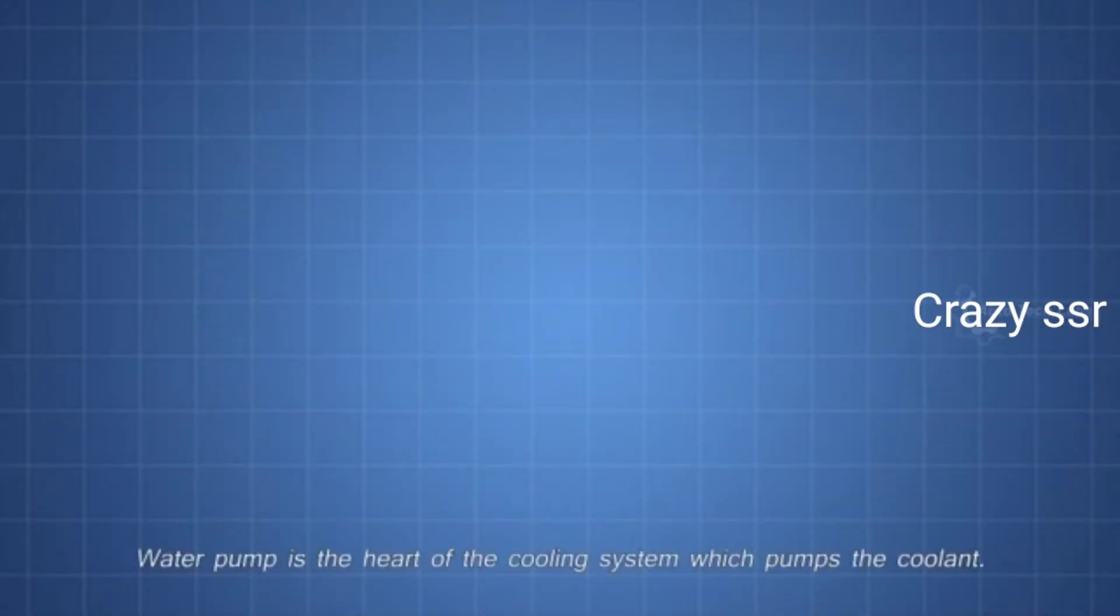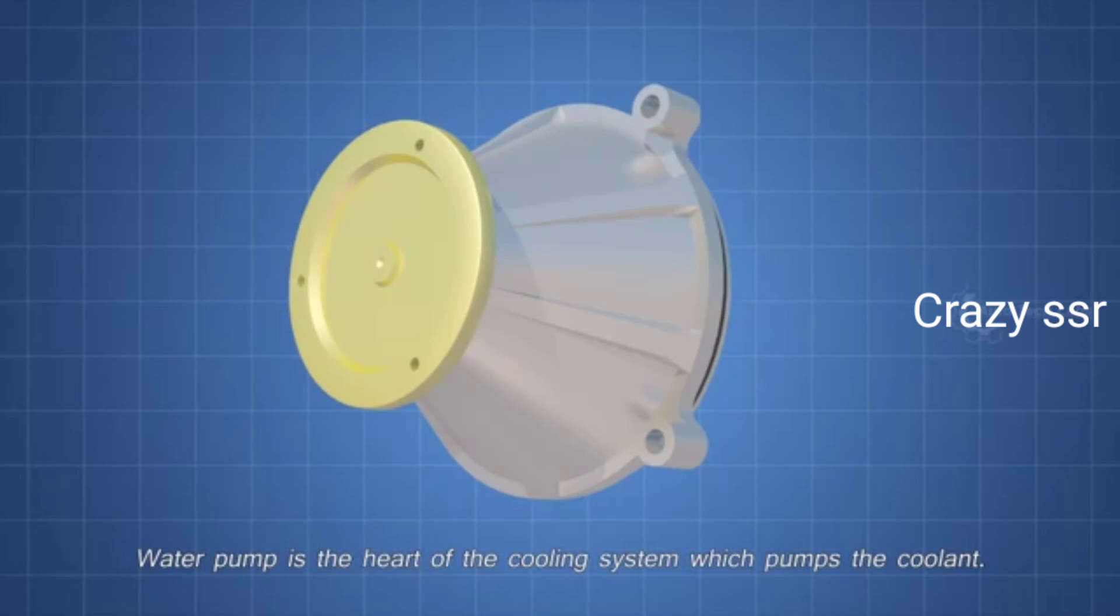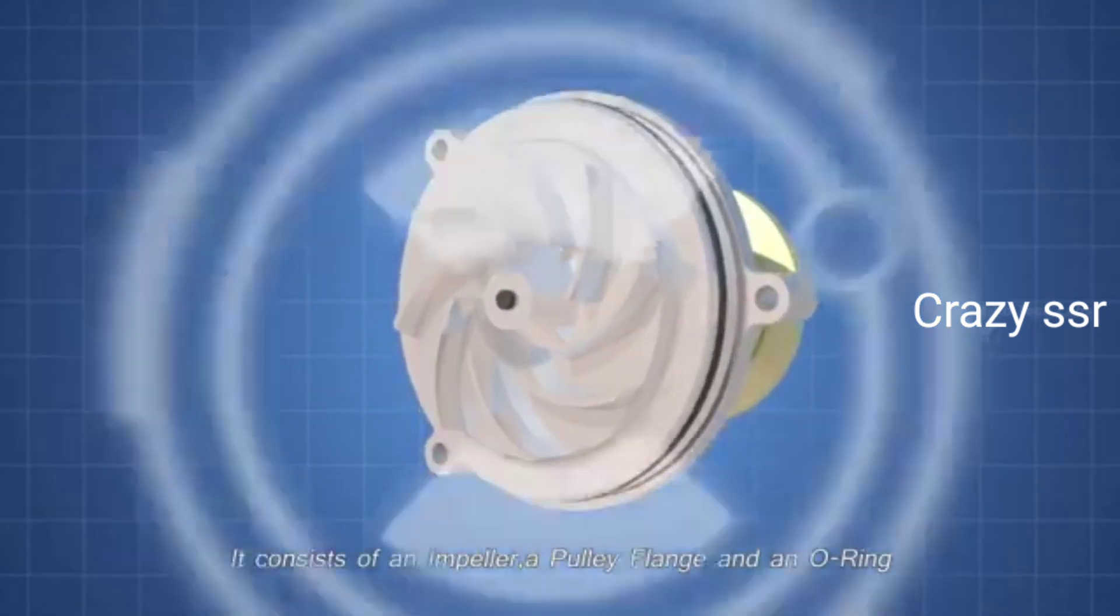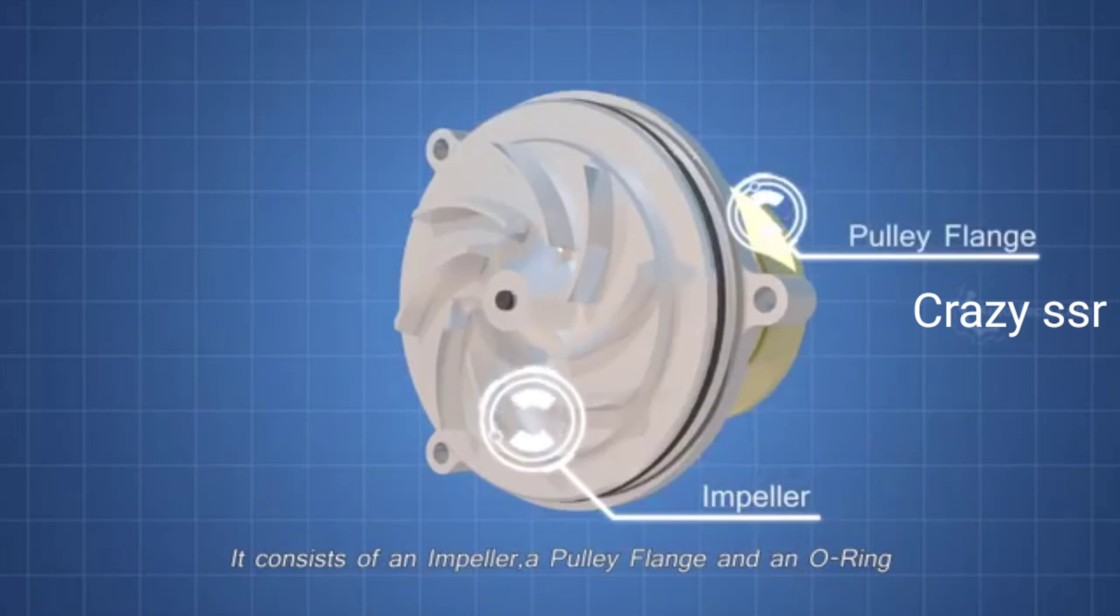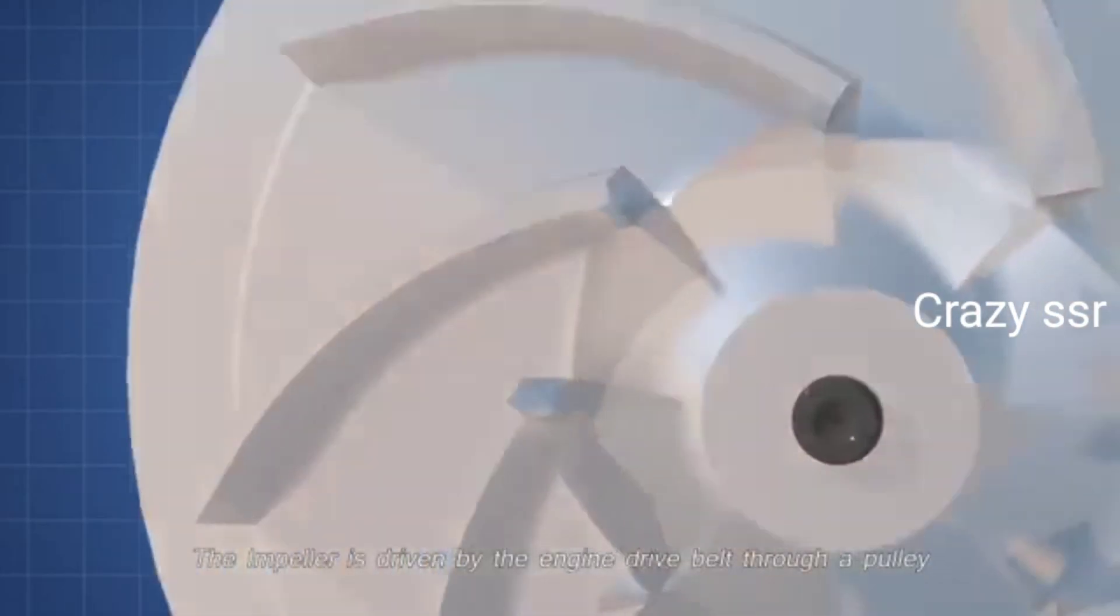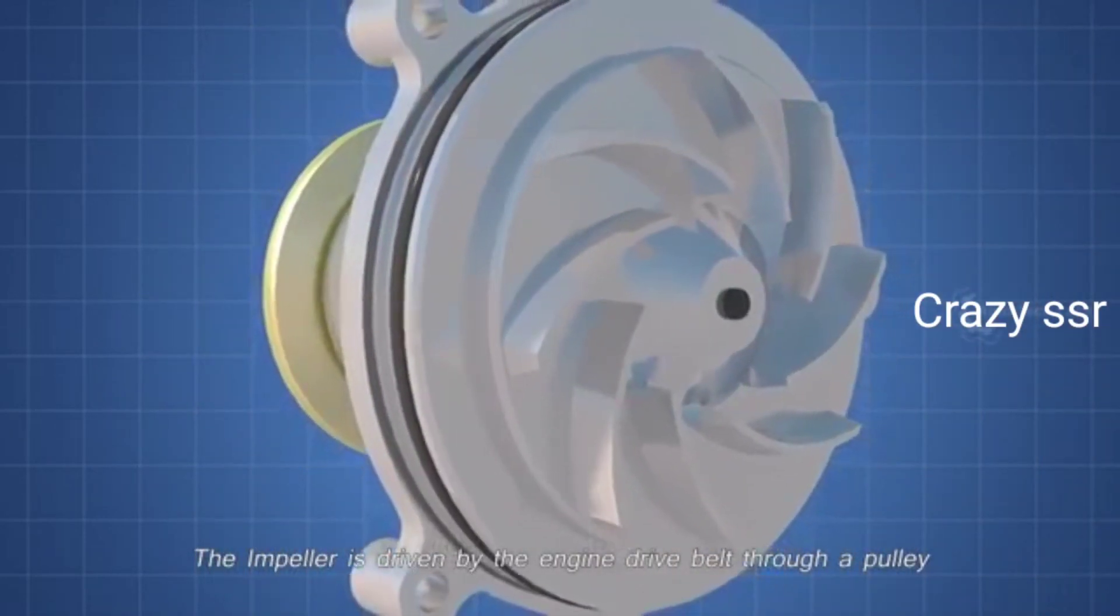First, the water pump. Water pump is the heart of the cooling system, which pumps the coolant. It consists of an impeller, a pulley flange, and a no ring. The impeller is driven by the engine drive belt through a pulley.